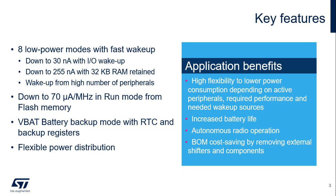The STM32WL5 has several key features related to power management. Several low-power modes go down to 30 nanoamps, while it is still possible to wake up the MCU with an event or an I/O. For only 255 nanoamps, 32 kilobytes of SRAM can be retained. Many peripherals can wake up from the various low-power modes. Dynamic consumption is down to 70 microamps per MHz executing from flash memory.